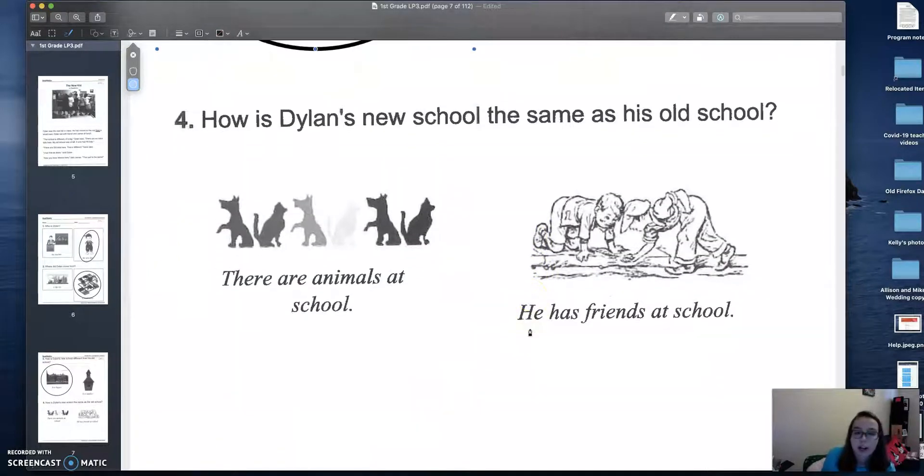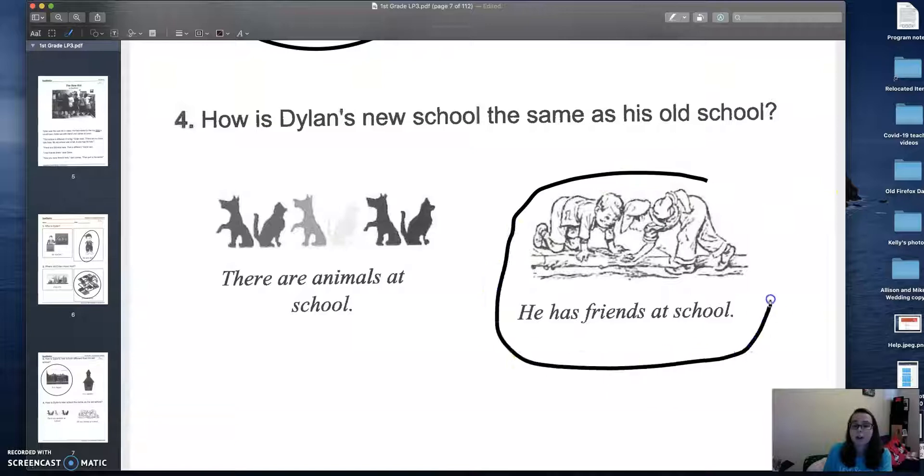Question number four. You guys are doing great. How is Dylan's new school the same as his old school? There are animals at school or he has friends at school. Do we have animals at school? No. But we do have friends. So let's go ahead and circle that.